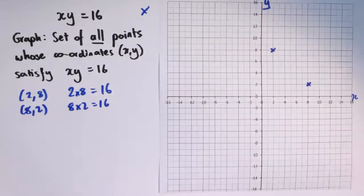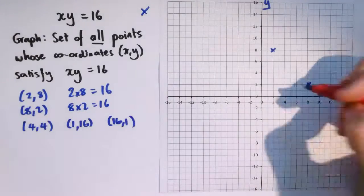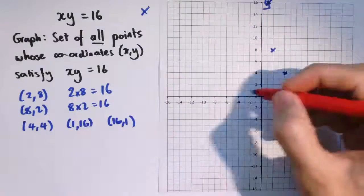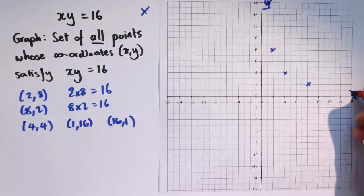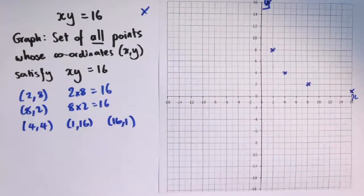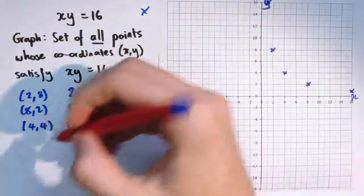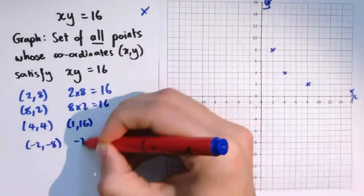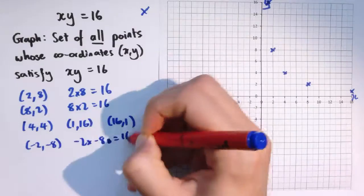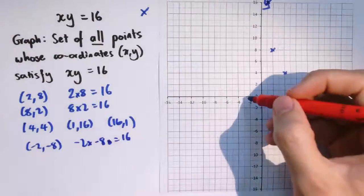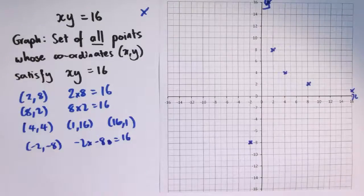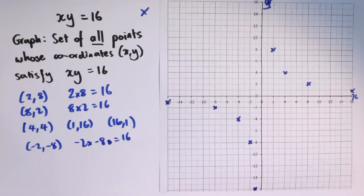And we could keep finding more points like this. These all work: (4,4), (1,16), and (16,1). We might think about other values that could work. We could have some negative values that work. Actually all of the negative versions of these work as well. So (-2,-8) would work, because it's still the case that -2 times -8 is 16. So let's just put all of those in there as well.